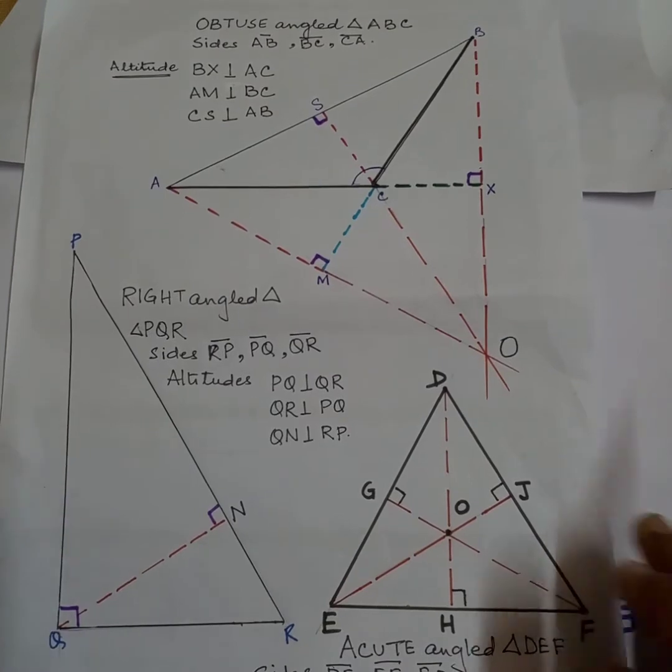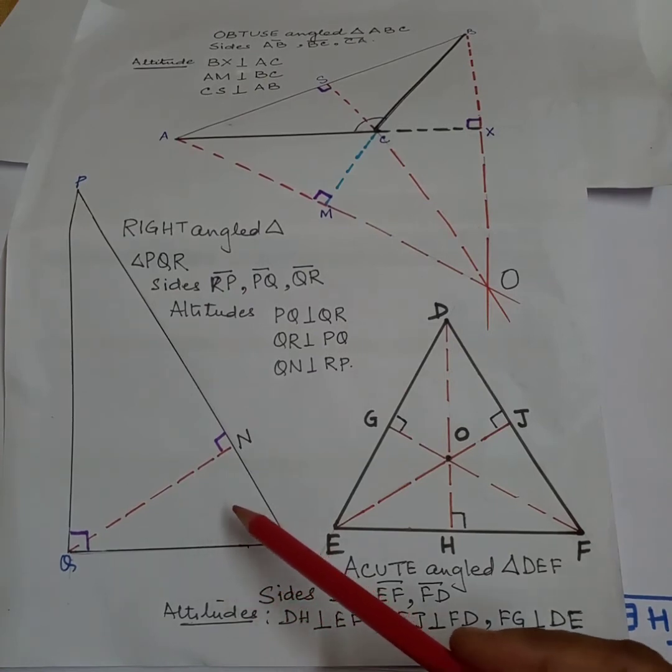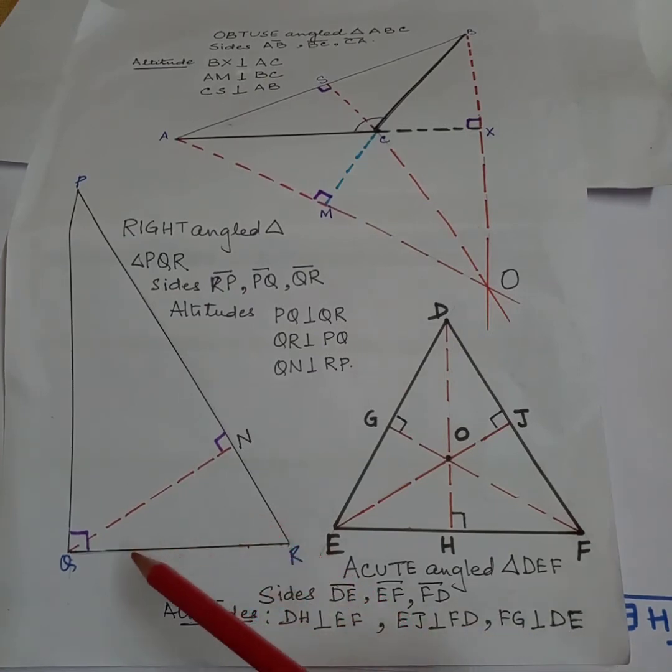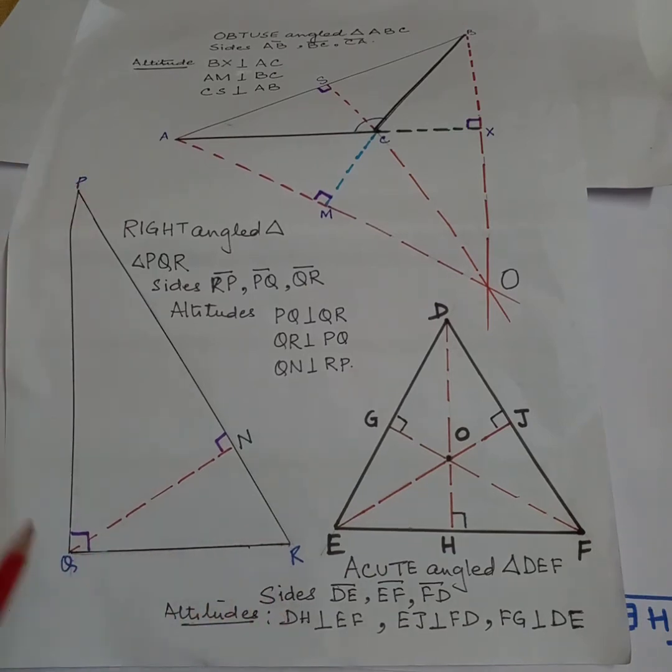Now let's see the altitude of other triangles. This is a right-angled triangle. If the right angle is at Q, then QR and QP are the altitudes. So QR is the altitude on PQ, and PQ is the altitude on QR.